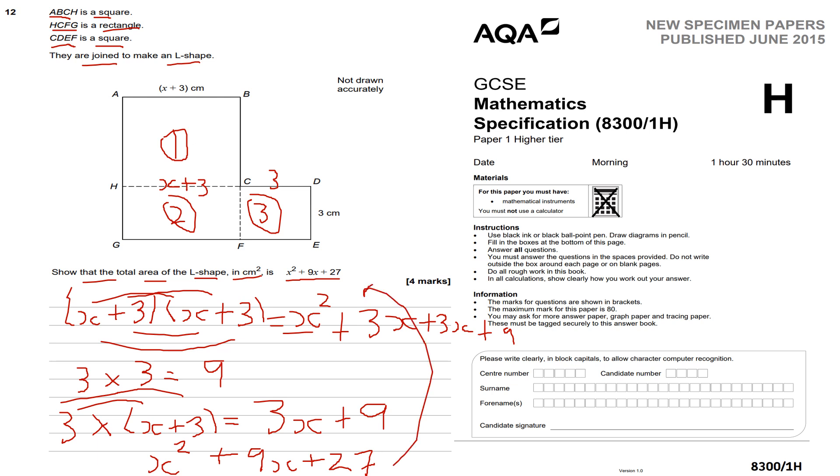This is area of a compound shape involving algebra. The key to remember is the area of a square is length times width, which is L times L, because a square has the same length and width. Area of a square is length times length, and the area of a rectangle is length times width. This involves expanding brackets and multiplying numbers - the area of a compound shape involving algebra. That's question 12 done.